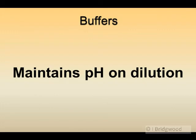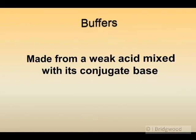A buffer also maintains pH on dilution. A buffer is made from, for example, a weak acid such as ethanoic acid and its conjugate base such as the ethanoate ion. Or it could be a weak base and its conjugate acid — weak base ammonia and its conjugate acid ammonium chloride, for example.